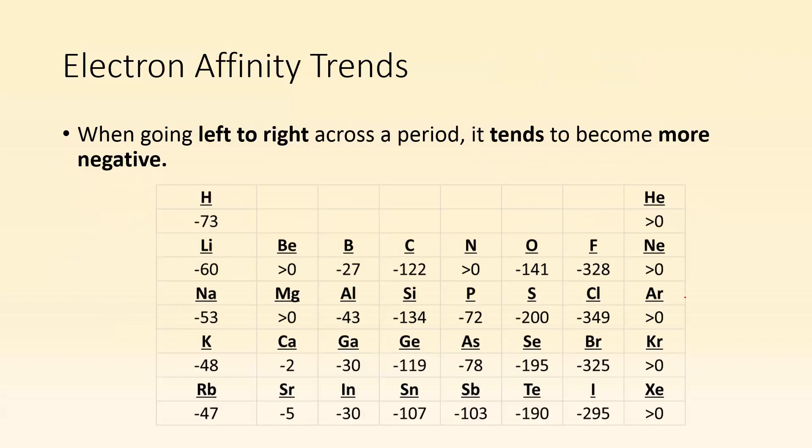Back to electron affinity and trends. When going left to right across a period, it tends to become more negative. You can see lithium starts off as negative 60, negative 27, negative 122, negative 141, negative 328. So very loosely, it tends to become more negative. That's the general pattern.